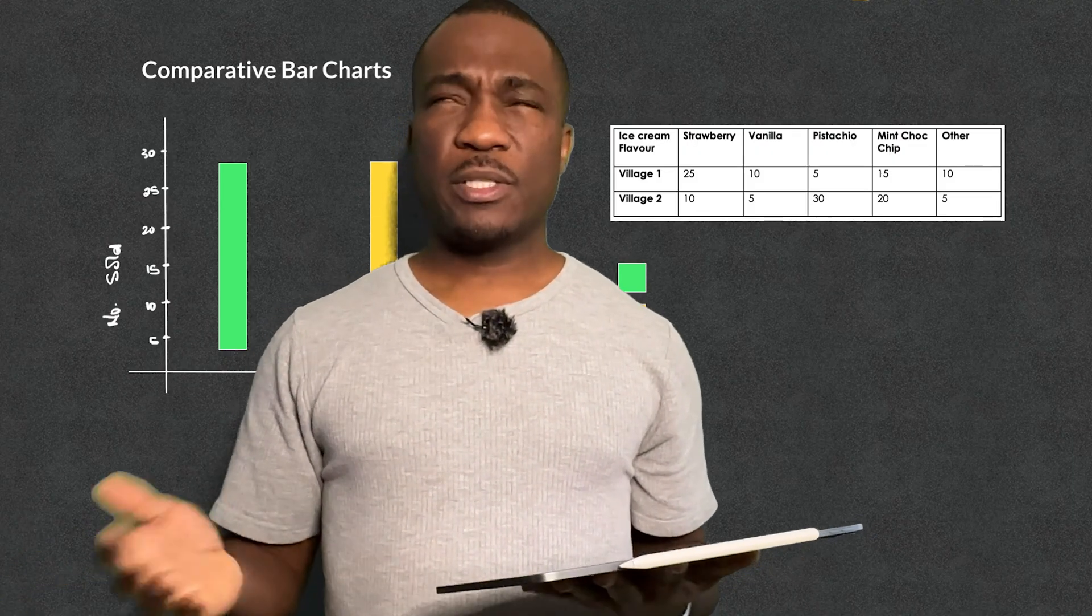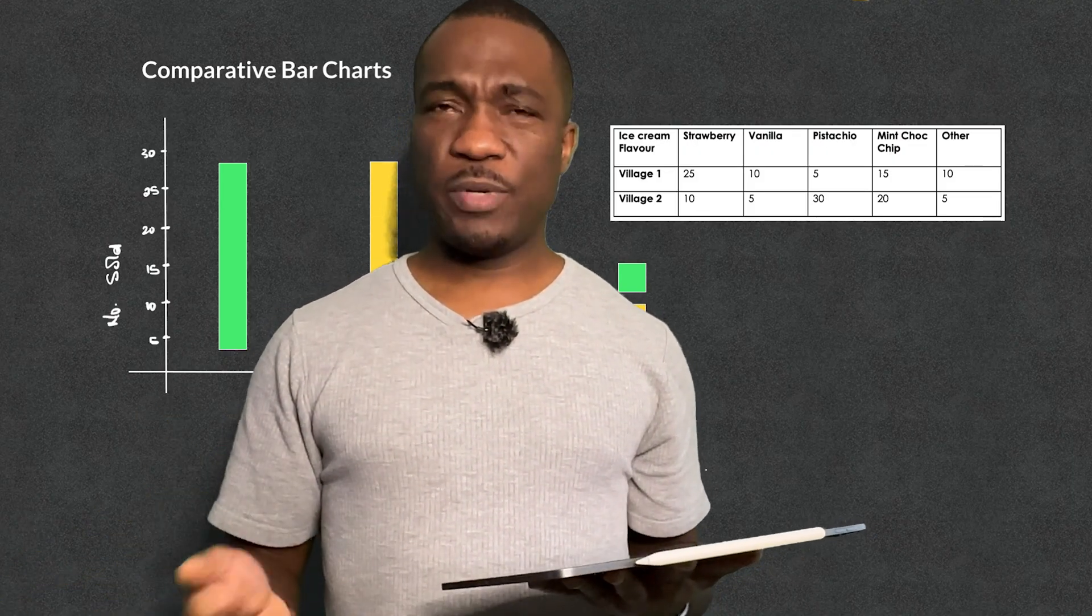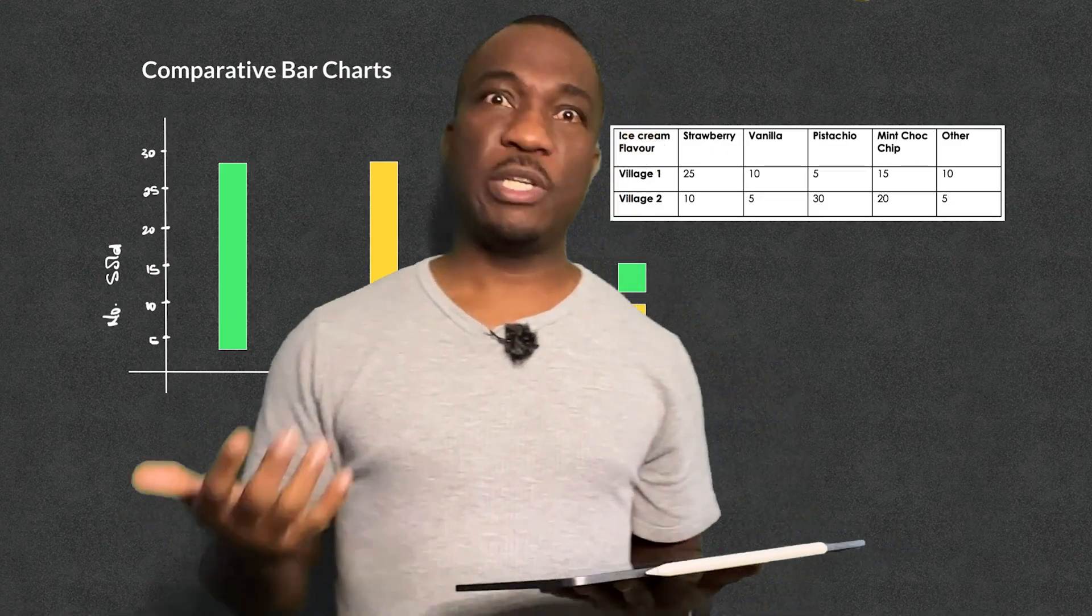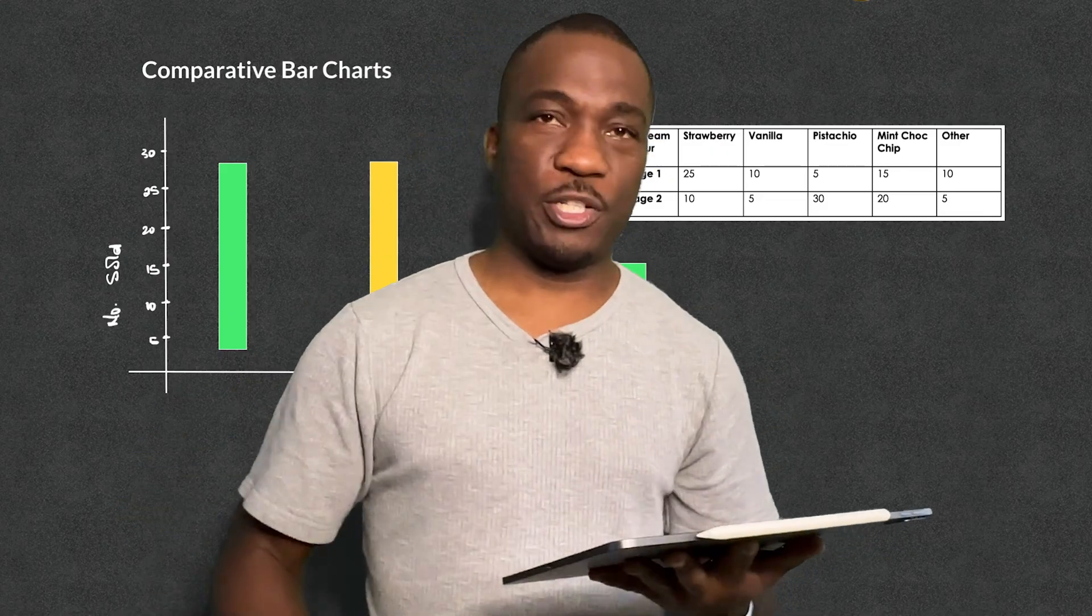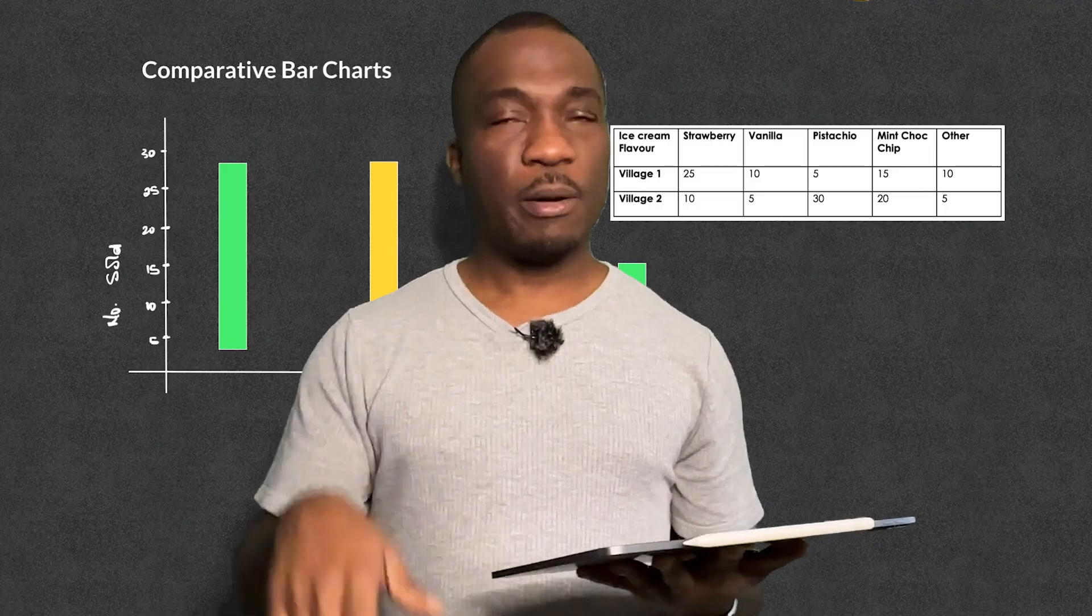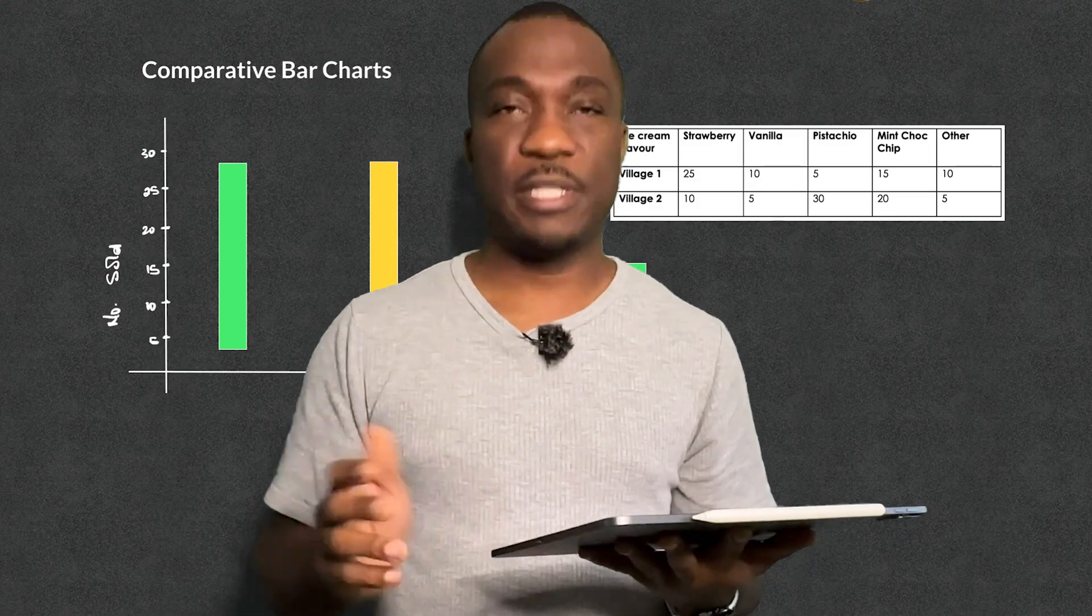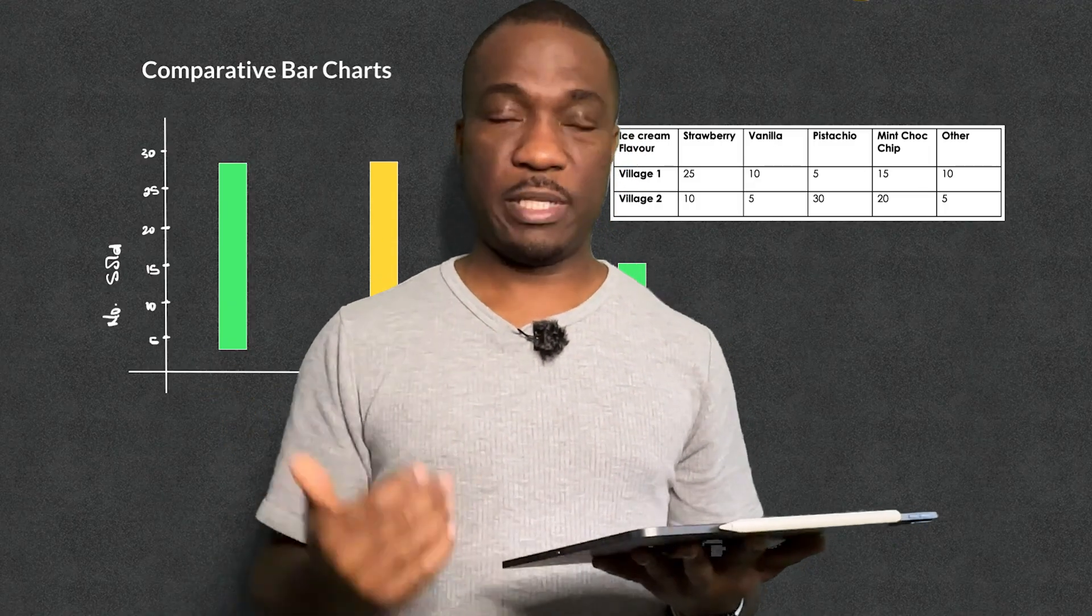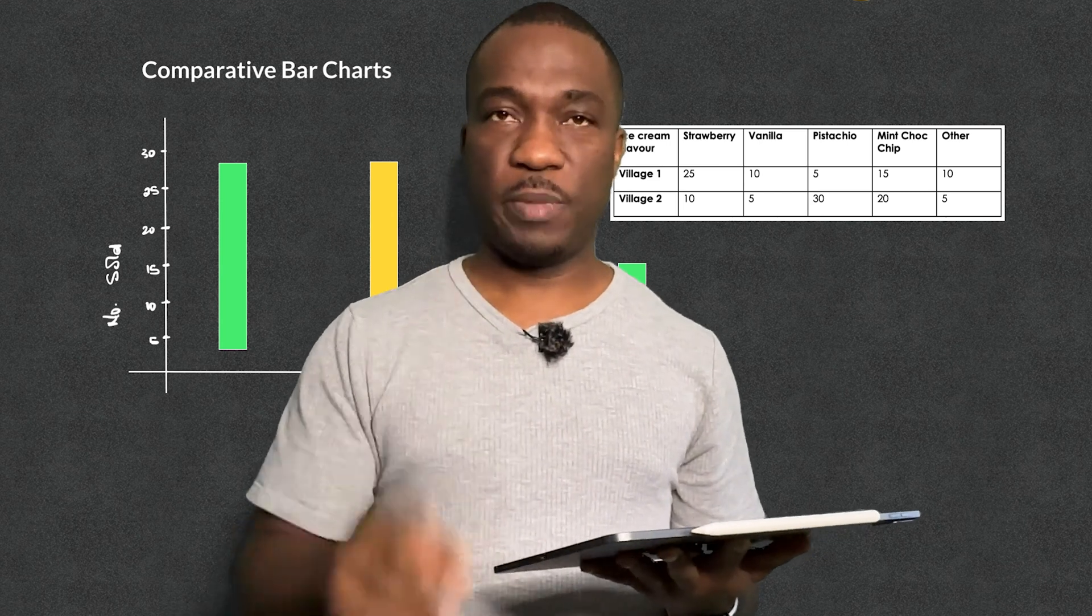So what's this all about? It's still a bar chart and we still obey the rules that we normally obey from bar charts, but now we're comparing two bar charts. That's where the word comparative comes from. It's a comparative bar chart. We're comparing two bits of information.